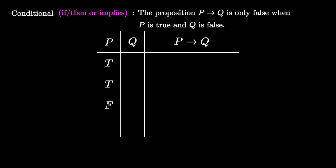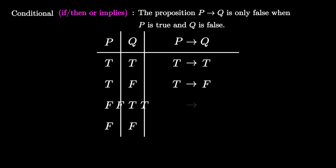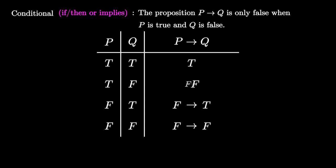We have two columns, one for p and q, and another column for the connective, and four rows for each of the four situations: true implies true, true implies false, false implies true, and false implies false. According to the definition, the only one of these that is false is in row two, where we have true implies false. So this is the truth table for the conditional connective.